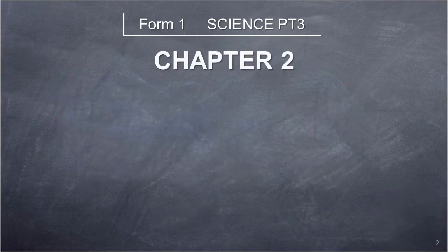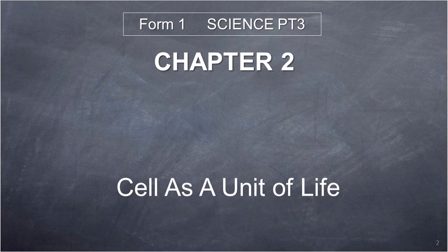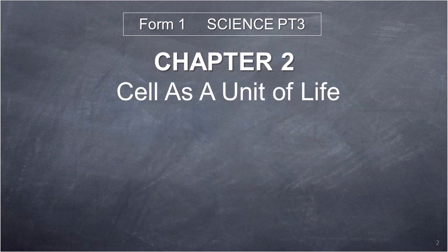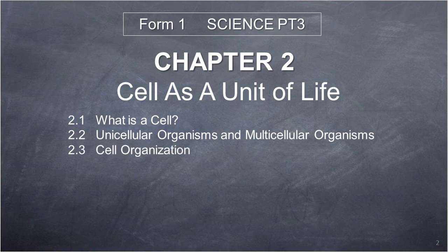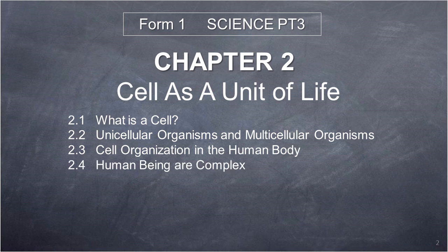Chapter 2: Cell as a Unit of Life. 2.1 What is a cell? 2.2 Unicellular Organisms and Multicellular Organisms. 2.3 Cell Organization in the Human Body. 2.4 Human Beings are Complex Organisms.